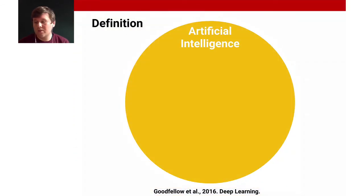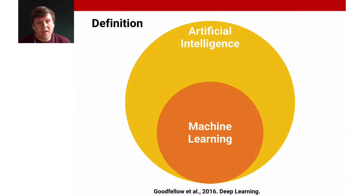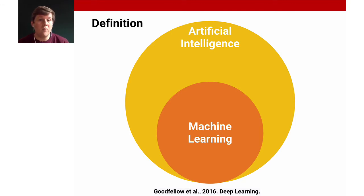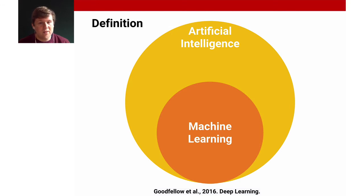Machine learning is a subset of Artificial Intelligence. Artificial Intelligence as a term is even harder to define — some say AI is whatever hasn't been done yet. I would define it as any software or hardware that gives computers abilities normally attributed to humans. For this lecture, I will mostly talk about machine learning and will use the terms artificial intelligence and machine learning synonymously.